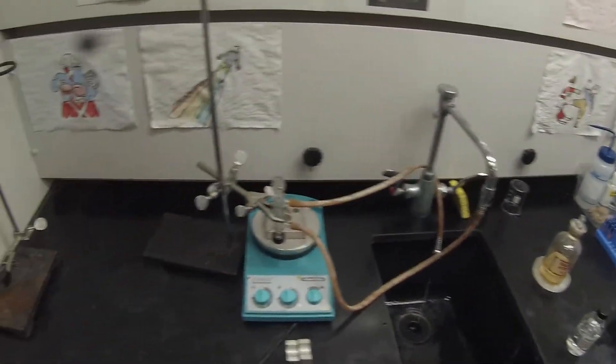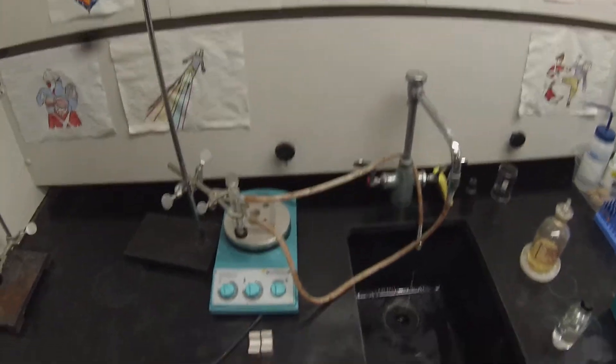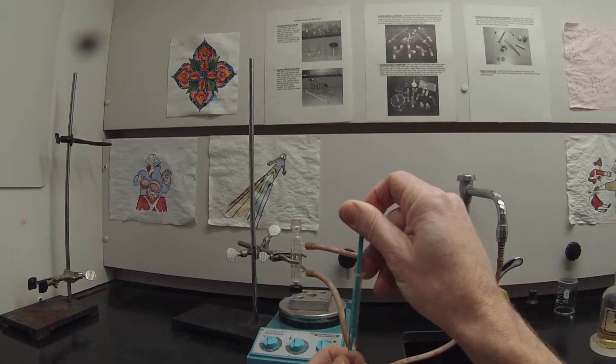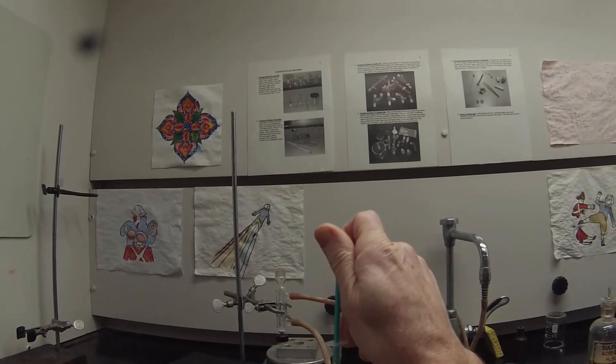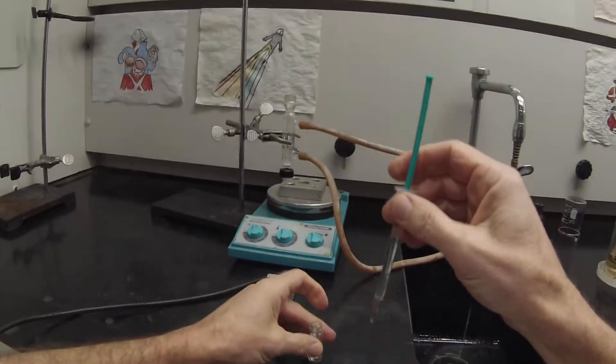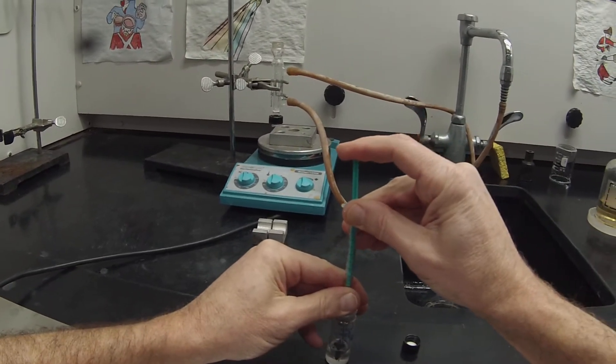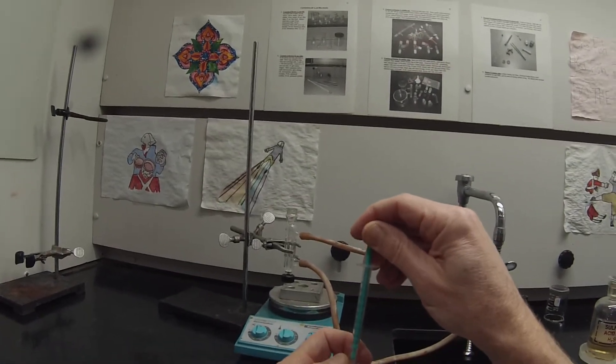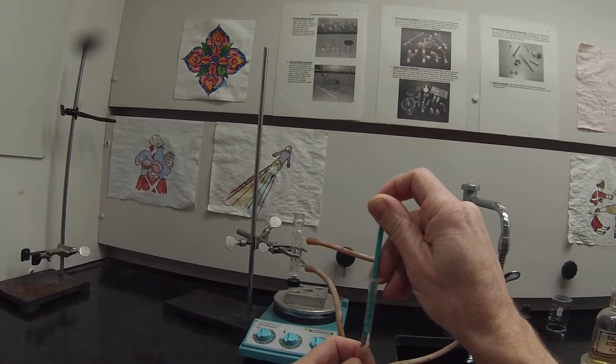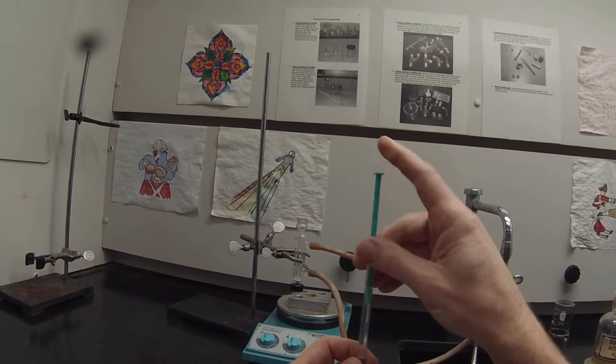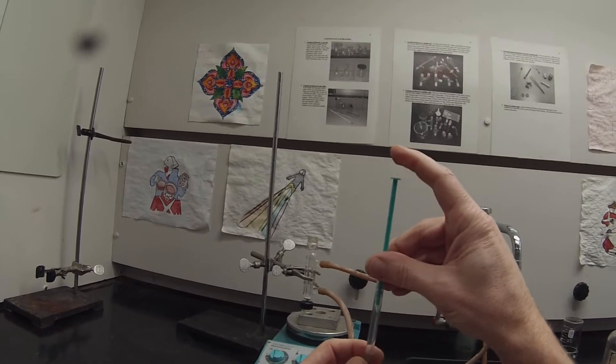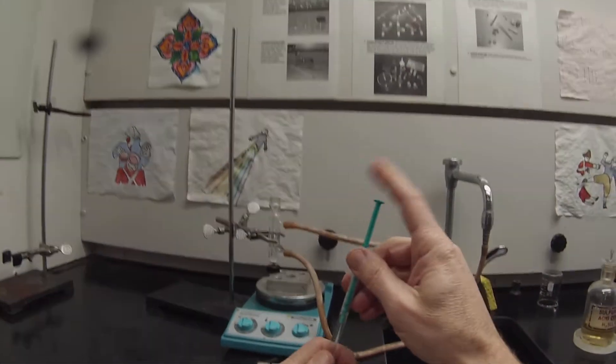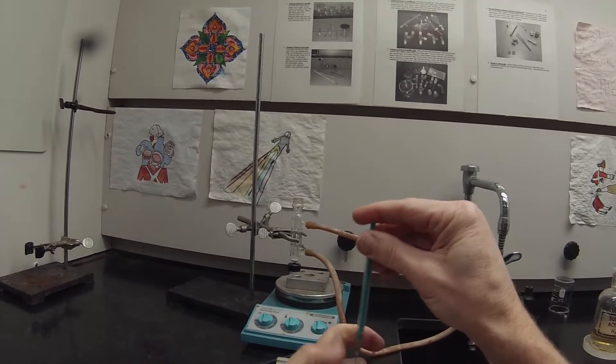Now I'm going to use the 1-milliliter syringe to transfer 1.75 milliliters of this alcohol. So basically a full syringe. There's 1.75 milliliters of this alcohol.